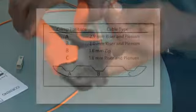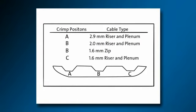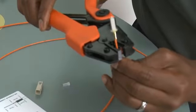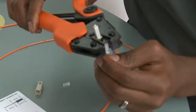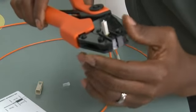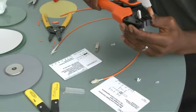The A's work for 2.9 millimeter, B's for 2.0 and 1.6, and then C for 1.6. So I'm going to be using the C hole because I'm installing the connector on 1.6 millimeter.